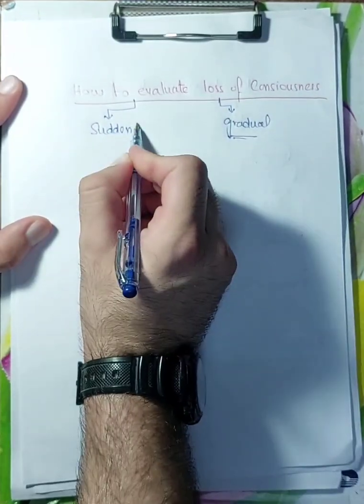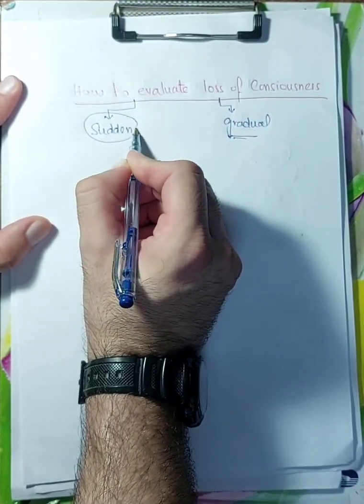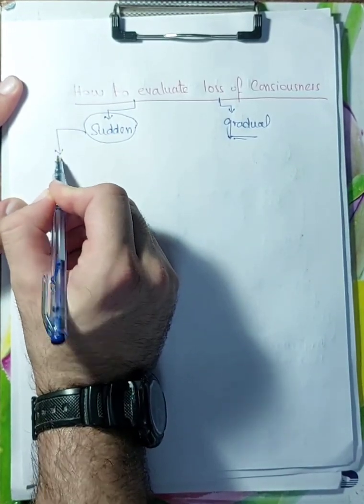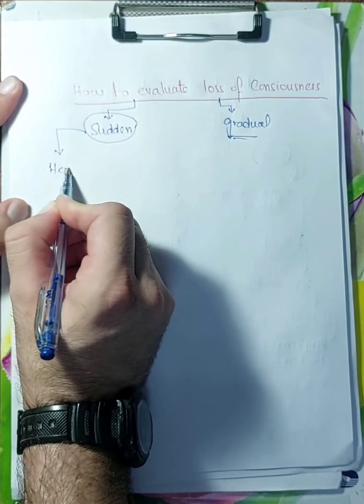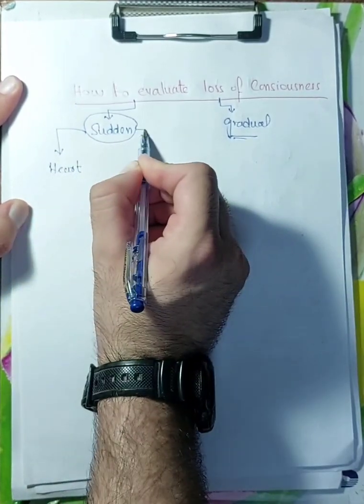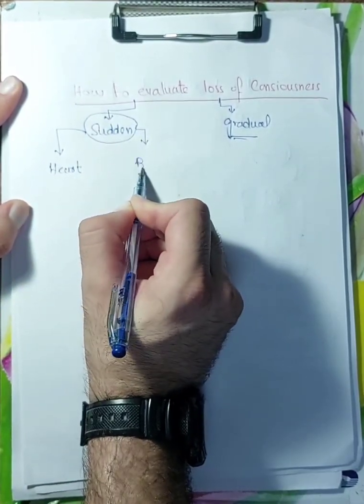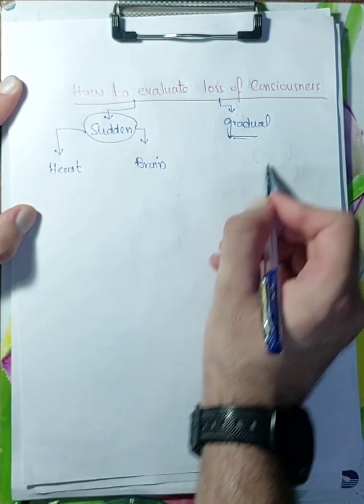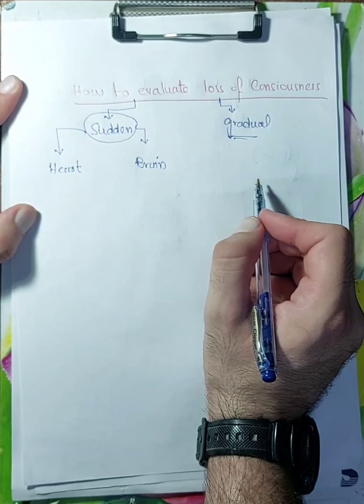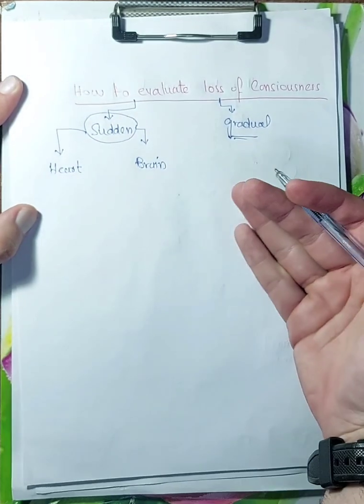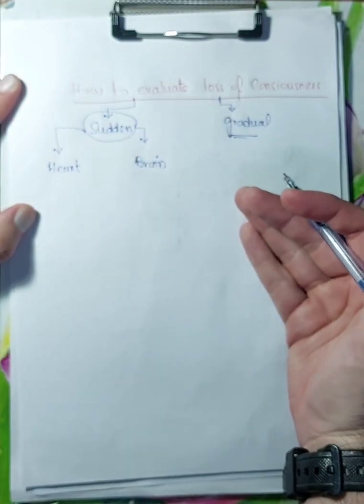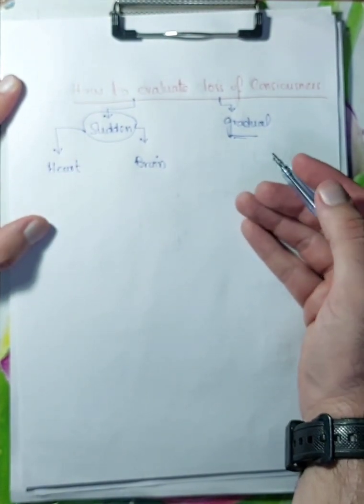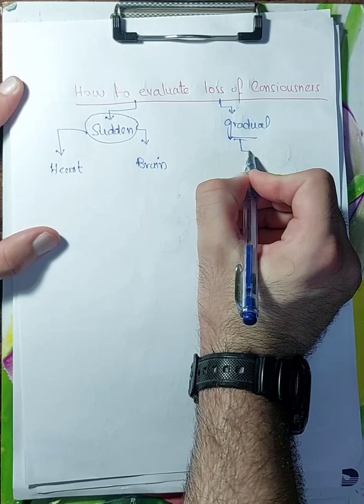If a person lost his consciousness level suddenly, all of a sudden, you will focus on two things. Number one, heart. And number two, brain. If he lost his consciousness level gradually, first he becomes uncomfortable, then slowly and gradually he lost his consciousness level. You will focus on these things.